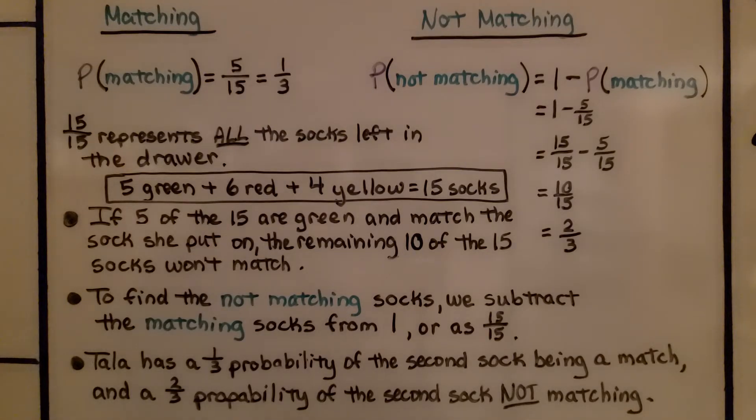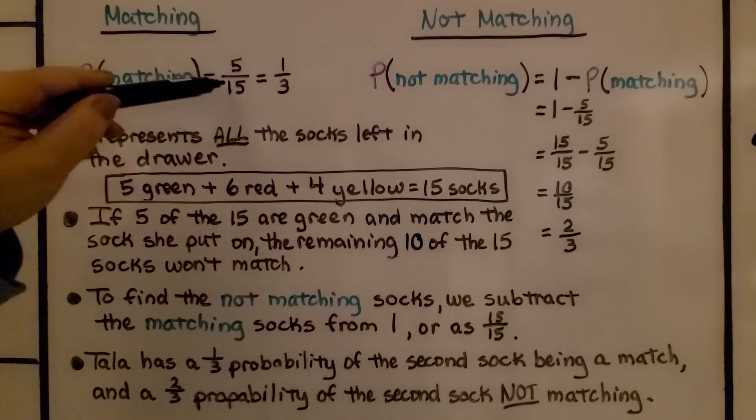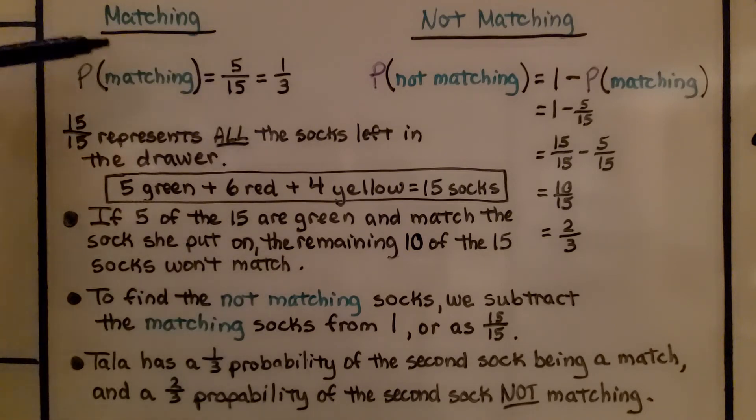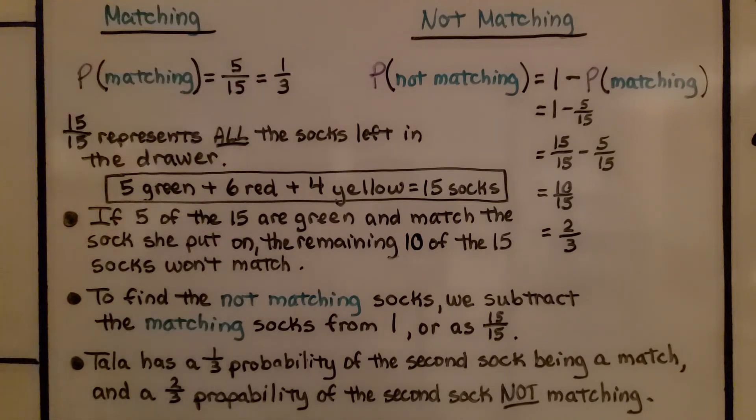Now let's explain this a little bit more so we completely understand. For the matching sock, it would have to be green. There were five green socks in the drawer. And since there were five green, six red, four yellow, that's 15 socks. That's our denominator. The probability of matching when she picked the second sock was five-fifteenths, which can be simplified to one third.